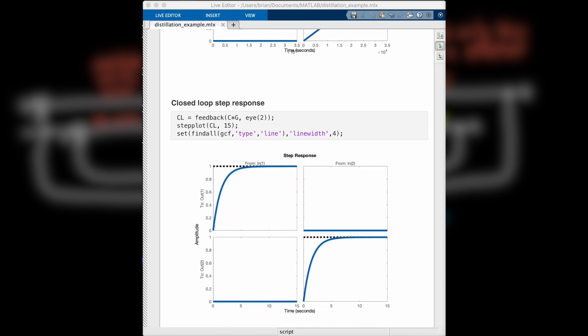And we can look at the closed-loop response of this system with the feedback command, and see the step response. And check this out, it's practically perfect. I'm asking both outputs to go to 100% concentration, and they both rise up and settle perfectly within 10 seconds or so.